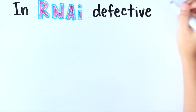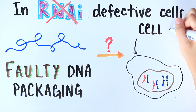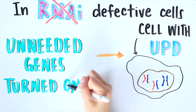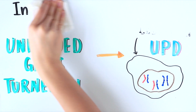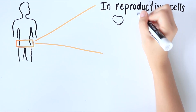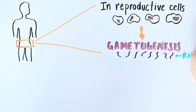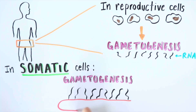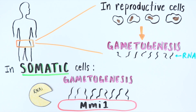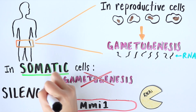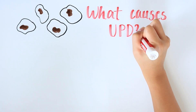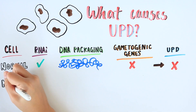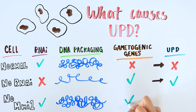We initially suspected that chromosome segregation problems had something to do with faulty DNA packaging and centromeres in RNAi-defective cells. But later we discovered that it is actually the failure to keep unneeded genes safely off that is the key factor. Interestingly, we had previously discovered that RNAi prevents the expression of genes involved in gametogenesis — the specialized process that gives rise to eggs and sperm. Gametogenesis should only occur in reproductive cells, so these genes are kept tightly silenced in somatic cells by RNAi machinery and a conserved protein MMI1, which is critical for preventing untimely expression of gametogenic genes. Remarkably, DNA packaging at centromeres is normal in cells lacking MMI1, but those cells still develop UPD, indicating that the abnormal expression of gametogenic genes rather than defects in DNA packaging triggers the chromosomal anomaly.